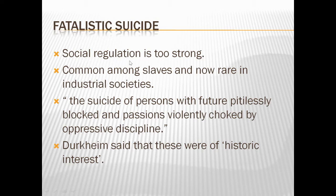The fourth type is fatalistic suicide. It is when the social regulation is too strong — jab social regulation bohut strong hai. It is common among the slaves, and now rare in industrial society. Yeh fatalistic examples jo the, they were there during the slave society, jab ki bohut strict regulation or rules hota tha, itna zyada control tha, that the person used to feel suffocated. That type of situation results into a suicide which is known as fatalistic suicide.